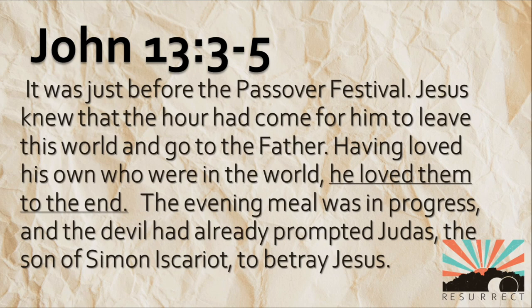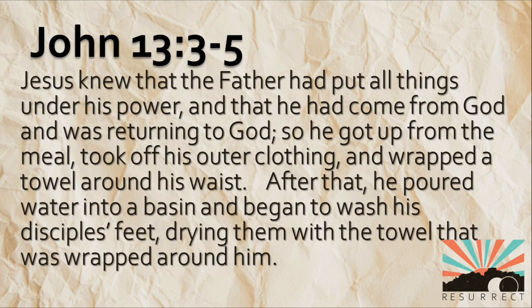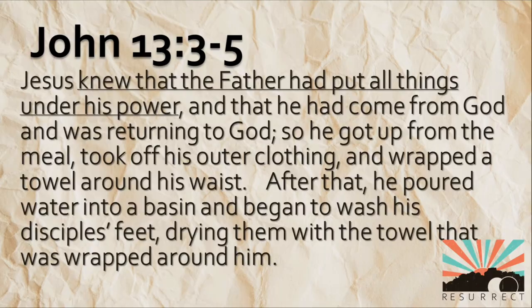The evening meal was in progress, and the devil had already prompted Judas, the son of Simon Iscariot, to betray Jesus. Jesus knew that the Father had put all things under his power, that he had come from God, and that he was returning to God. What would you think the next phrase would be when you see that he's ridden into town on the donkey, that he has shown that he's the Messiah by weeping over Jerusalem and prophesying what's going to happen? He says clearly — and I want you to get this phrase — that God had put all things under his authority.